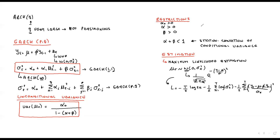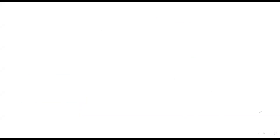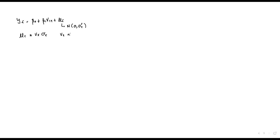We have estimated a GARCH(1,1) model. Now there is another important specification to know. The error ut can be written as ut equals B_t times sigma_t, where B_t is normally distributed with mean zero and variance one. This is called the standardized error or standardized residual. This variable is important for testing normality.